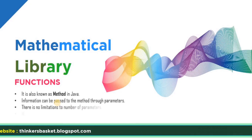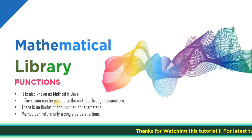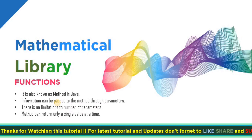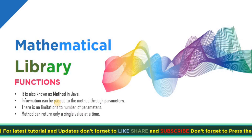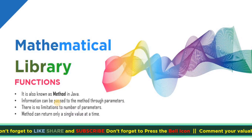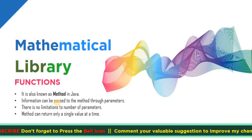In Java, a function is also known as a method. We are talking about mathematical library functions in Java, so the functions are known as methods. Information can be passed to the method through parameters — the values we are going to pass inside a function. The function will perform the action on those values and produce a result. There is no limit to the number of parameters.